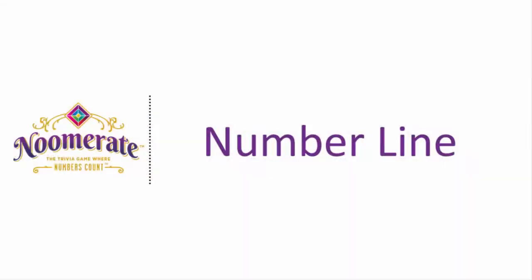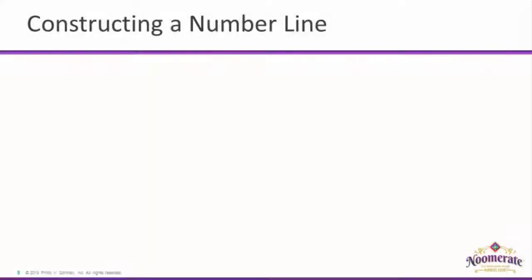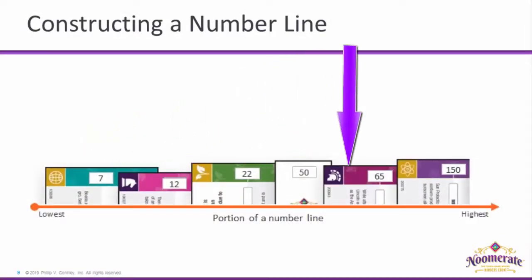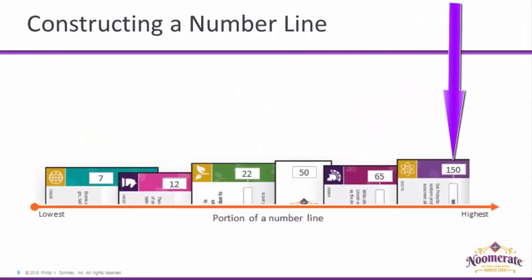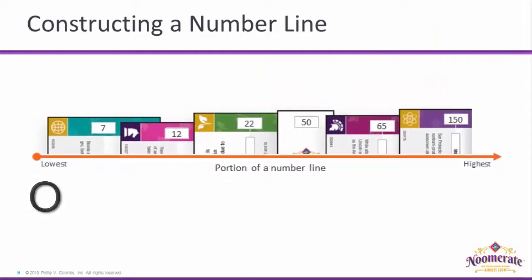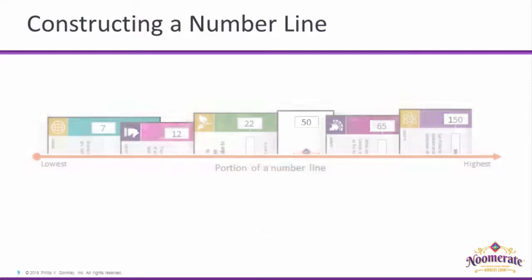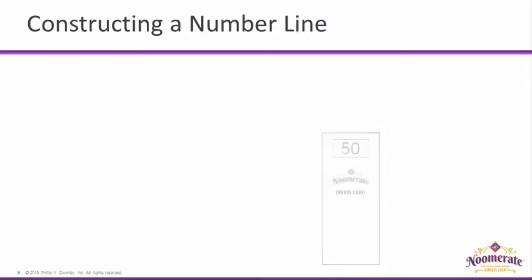You use these cards to construct a number line. A number line is all of your cards placed in ascending numerical order from left to right. The lowest number is zero, the highest is 10,000, and answers may or may not have a decimal. Each player has their own number line, starting with an origin card. Let's take a look at an example.